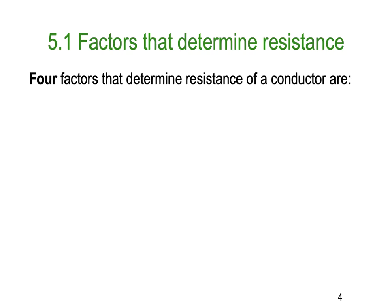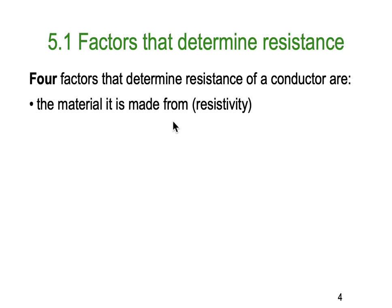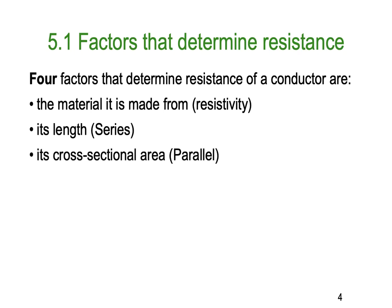There are four basic factors that determine resistance. These are worth noting: what the material is made from — the term we often use to describe that is the resistivity — which will determine how well it conducts electricity. The next is the length of the conductor — it's like putting lots of little conductors in series, one after the other. Also, the cross-sectional area, which is a bit like putting resistance values in parallel. And finally, temperature — with some materials the resistance goes up with temperature, called PTC or Positive Temperature Coefficient; sometimes resistance goes down as temperature goes up, called Negative Temperature Coefficient, or NTC.